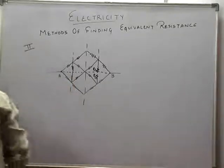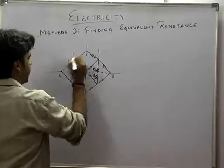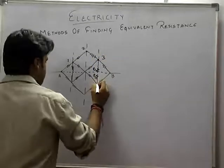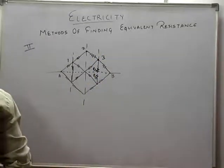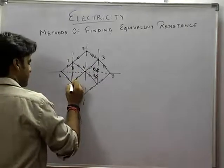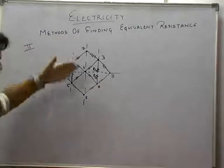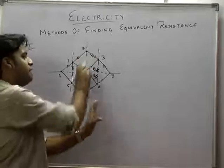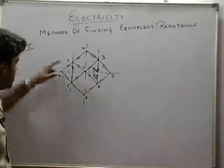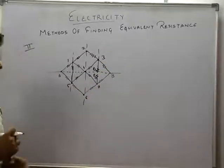Let us suppose mein yahan par marking kar deta hoon: this point be 1, this be 2, this is 3, this is 4, this is 5, ye 6, ye 7. Toh 2, 4, and 6 will be at equipotential; 1 and 5 will be at equipotential; 3 and 7 will be at equipotential.